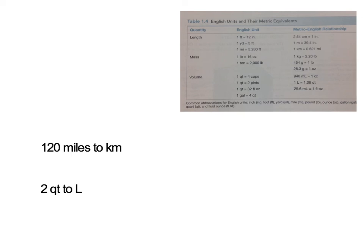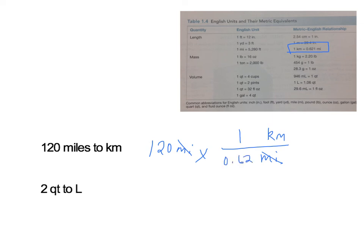Next: 120 miles to kilometers. Take the 120 miles and multiply by a conversion factor to turn it into kilometers — another one-factor conversion. From the table, 1 kilometer equals 0.621 miles. Miles needs to go on the bottom so it cancels, and kilometers goes on top. The calculation gives 32.206 kilometers, but we only have 2 significant figures in 120 miles, so our answer is 32 kilometers.